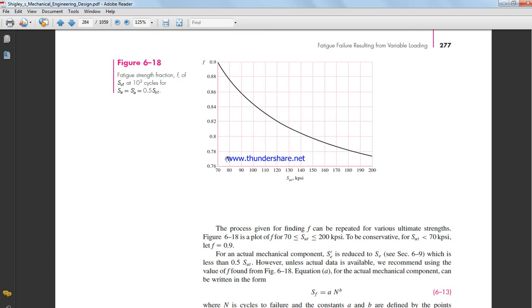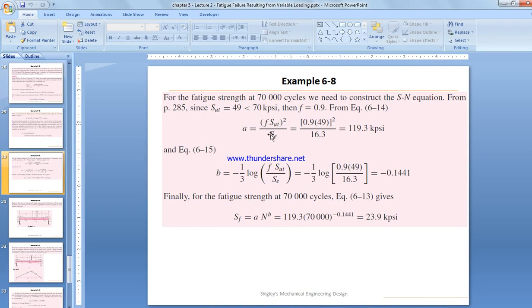F is the fatigue strength fraction. If SUT, which is equal to 49, is less than 70, we consider F equal to 0.9 by default. We put all those values in the equation, and we get SF fatigue strength is equal to 23.9 ksi.